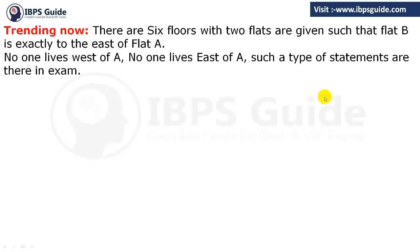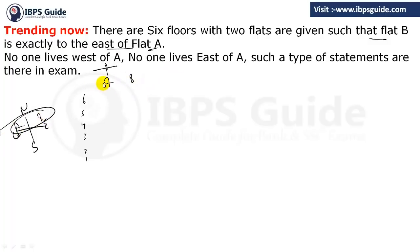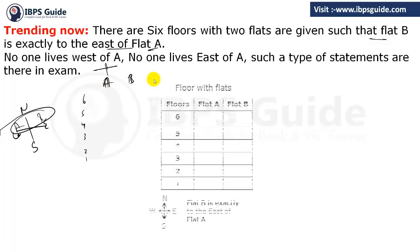Now the trending type: there are six floors with two flats given such that flat B is exactly to the east of flat A. What it actually means — suppose we have six floors 6, 5, 4, 3, 2, 1 and two flats on each. If flat B is exactly to the east of A, and we consider directions — north, south, east, west — then B must be to the east of A. So if A is in the left flat, B must be in the right flat on the same floor.